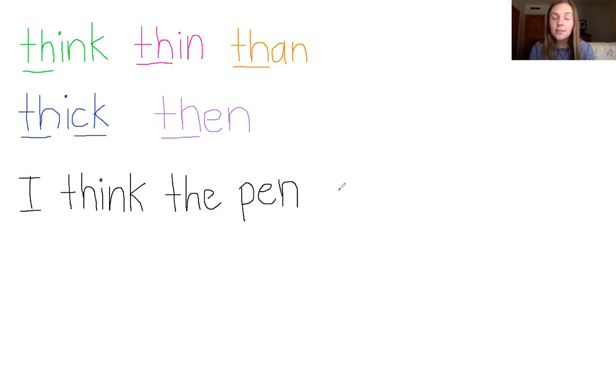Is. That is another sight word. I-S spells is. Good. Thin. Did we write the word thin? Yes, we did. We wrote it in pink right here. So let's write it again. T-H-I-N. I think the pen is thin. Now I'm not asking a question. So I don't need a question mark. I need a period to end my sentence. Good. So I'm going to put a period right there. Great job.